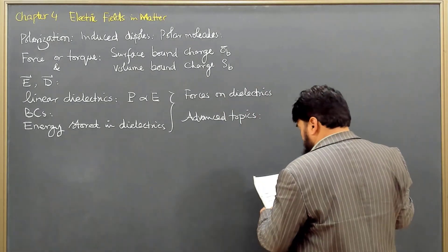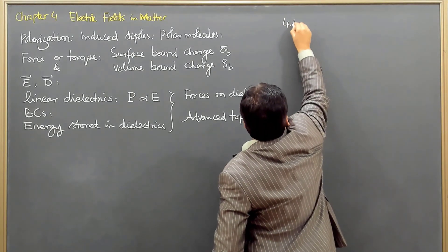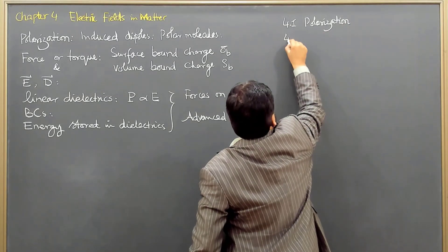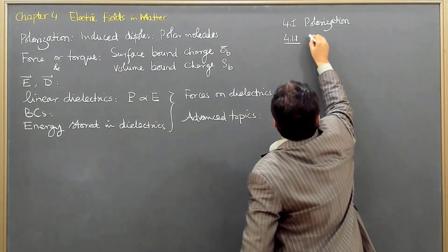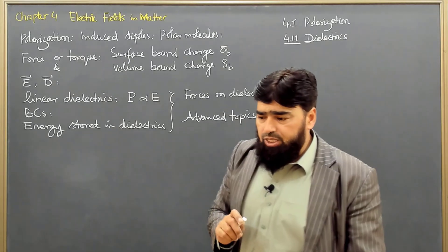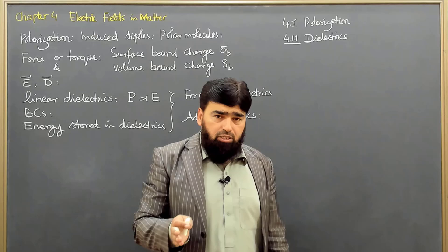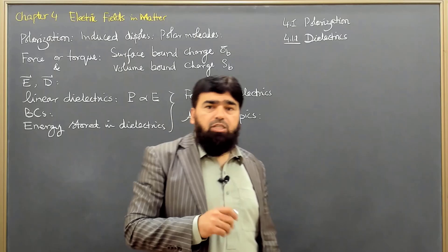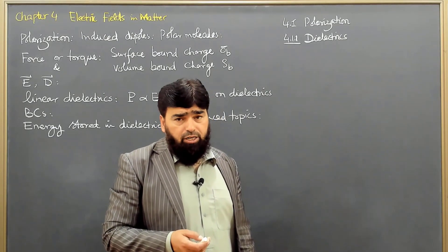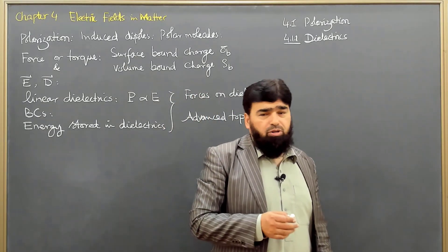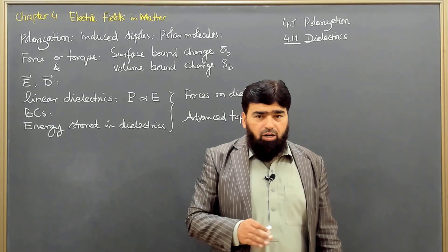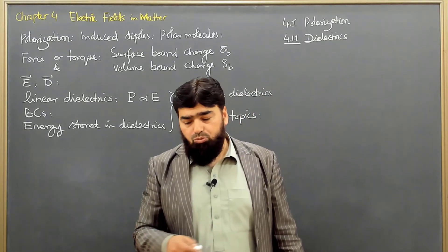So let's start with Section 4.1 — Polarization — and Section 4.1.1, Introduction to Dielectrics: what are dielectrics? Inside material we have solid, liquid, and gas. Restricting ourselves to solids, a material may be conducting or non-conducting, though this boundary is not always clear — it depends on the strength of the electric field. Some materials may be non-conducting for low electric fields but conducting for high electric fields. We consider usual conditions.